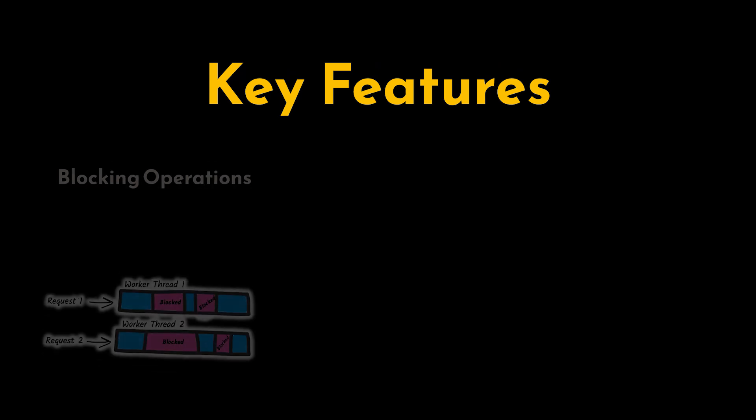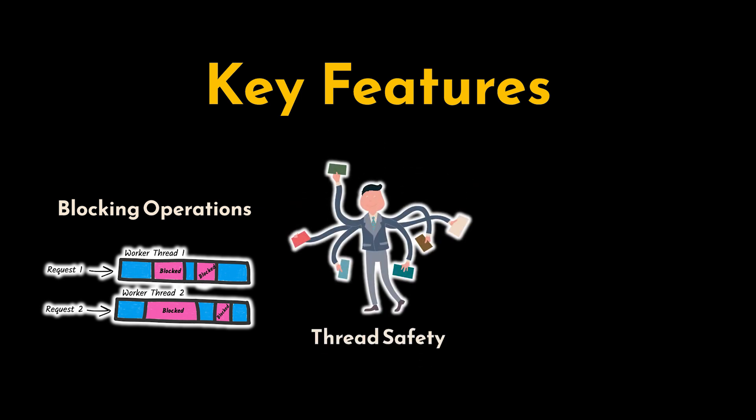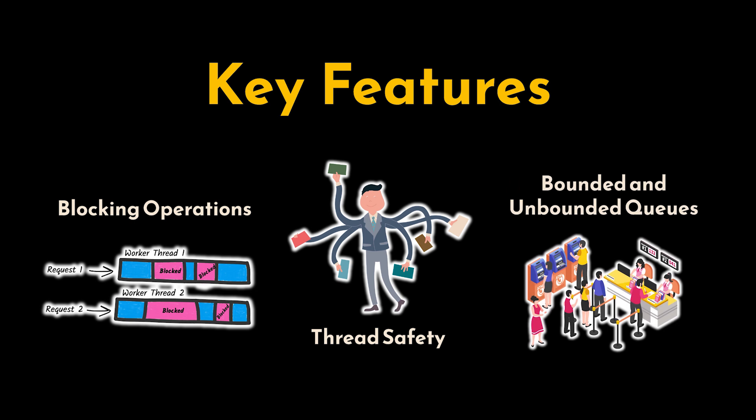Unlike a standard queue, the BlockingQueue provides key features such as blocking operations — the queue provides blocking put and take operations that wait until the queue is ready to accept new elements or consume existing elements. All operations are thread-safe, meaning multiple threads can safely access the queue concurrently. The queue can also be either bounded with a fixed capacity or unbounded with no maximum limit on its size.